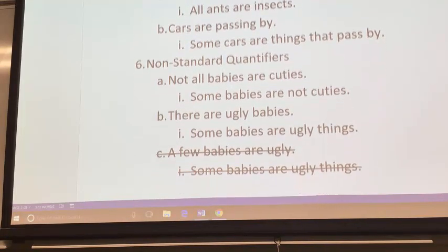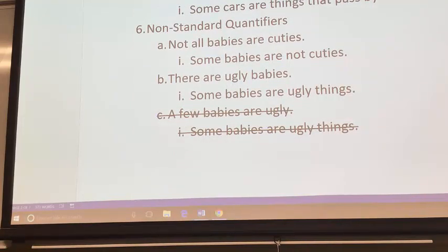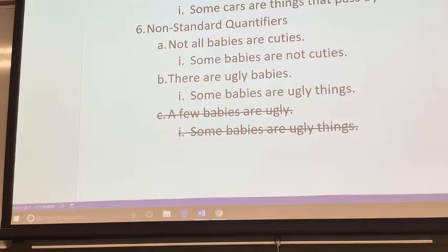You can also have non-standard quantifiers. If you say 'not all babies are cuties,' that's the denial of the A statement 'all babies are cuties.' The contradictory of an A statement is an O statement, so denying that all of them are means some are not. We can rewrite that as 'some babies are not cuties.' Also, 'there are ugly babies' is equivalent to saying some — we think of some as at least one. So 'there are' is the same thing: 'some babies are ugly things.'